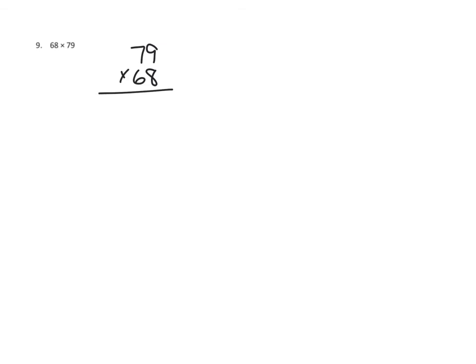We're not really working with partial products separately, so I'm going to write 79 times 68. We can do this in really just two steps, right here without doing separate little equations to the side. First, we're going to multiply 8 times 9 ones. 8 times 9 ones is 72 ones, so the 2 goes here and the 7 goes up as a carry. Then we multiply 8 times 7 tens: that's 56 tens, plus 7 more is 63 tens.